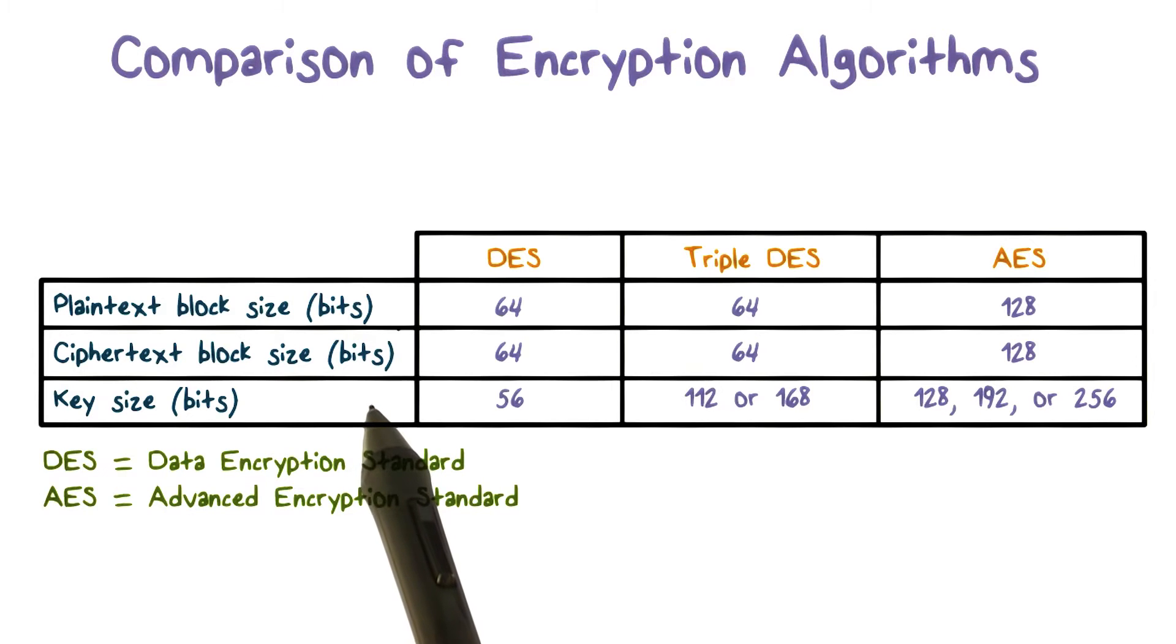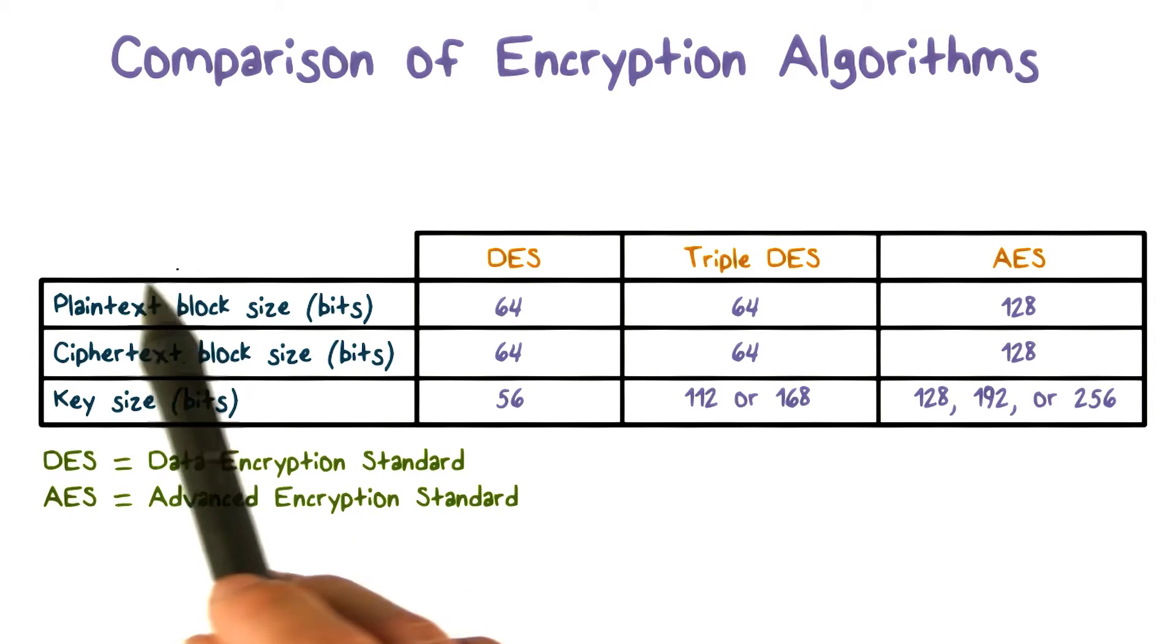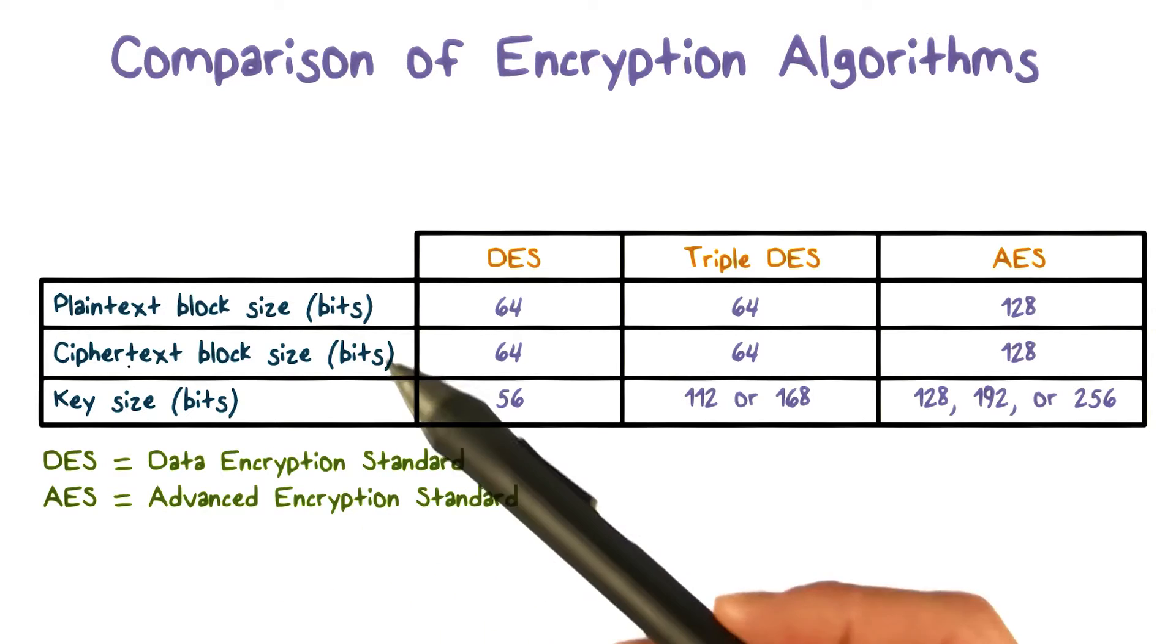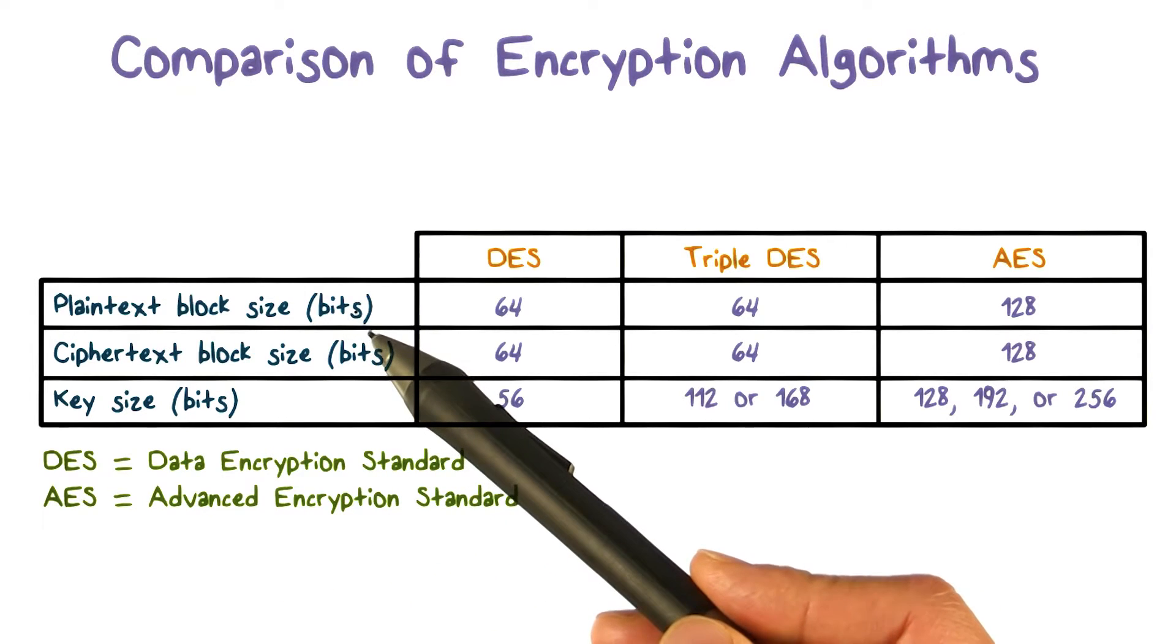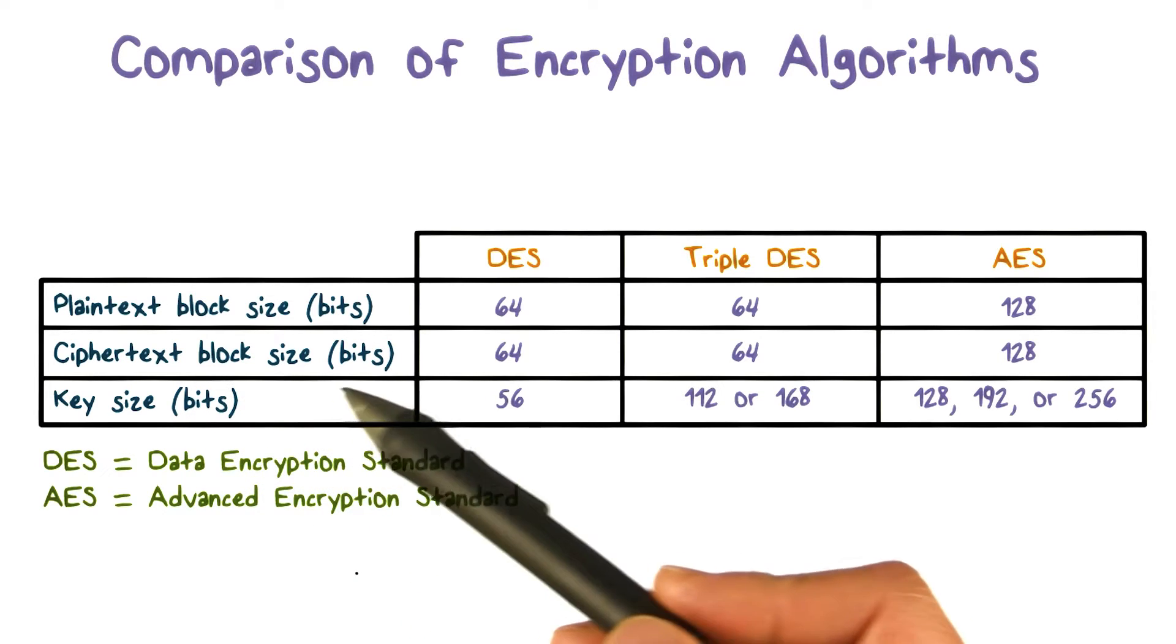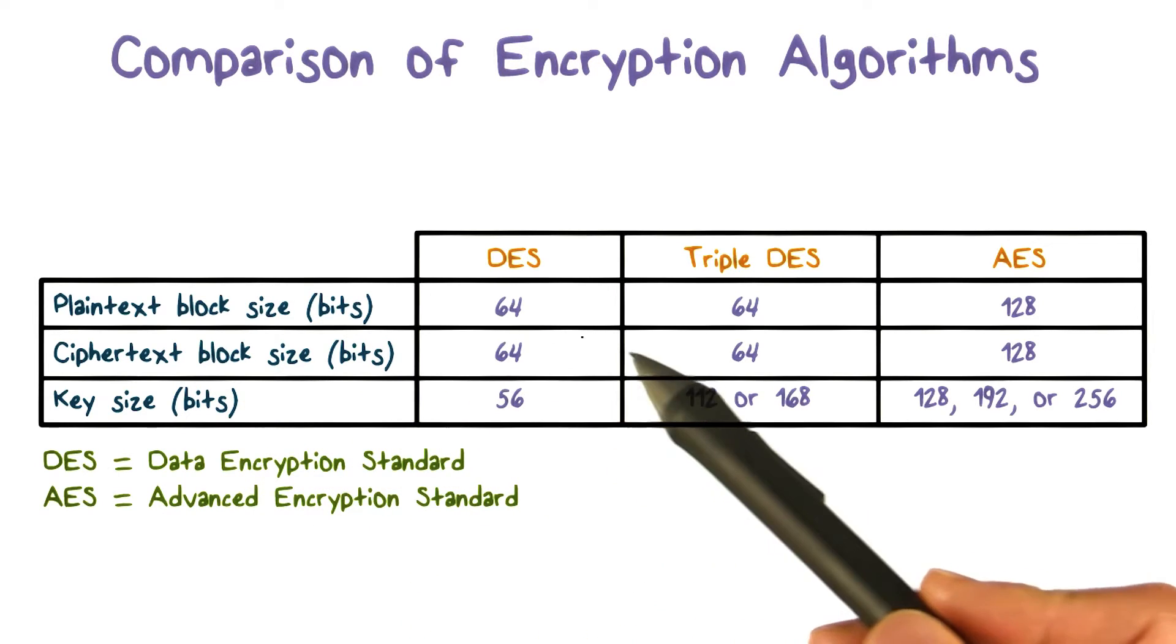The most commonly used symmetric encryption algorithms are the so-called block ciphers. A block cipher takes as input a plaintext in fixed size blocks and produces a block of ciphertext of equal size for each plaintext block.